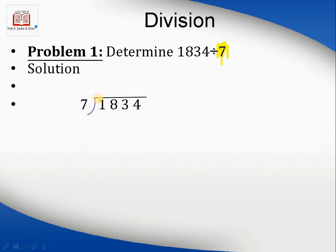This is the symbol for division. Seven is written here as the divisor, and 1834 is the dividend — the number we have to divide. First of all, we have to start from the most significant bit, whereas in previous cases like addition and multiplication we started from the right side, the least significant bit.